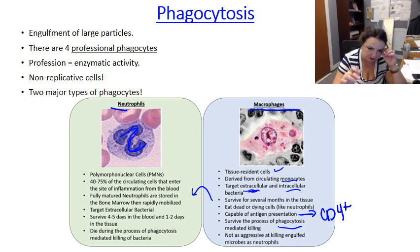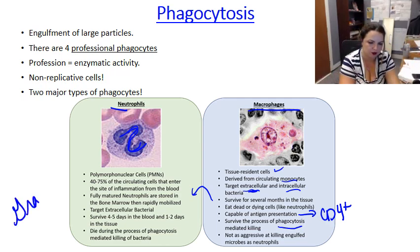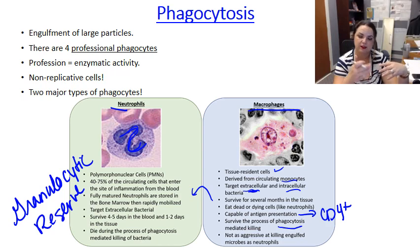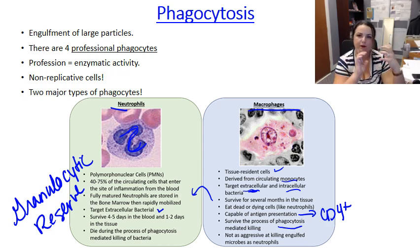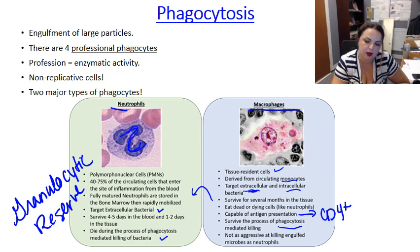Neutrophils are the first cell called to the site of infection. The macrophage is already there; neutrophils are called from the granulocytic reserve in the bone marrow, released into blood in massive quantities during inflammatory events, and follow chemokine signals to the site of inflammation. They target extracellular bacterial infections, survive about four to five days in blood and one to two days in tissue. They are highly inflammatory and deadly, and tend to die during phagocytosis-mediated killing of bacteria.